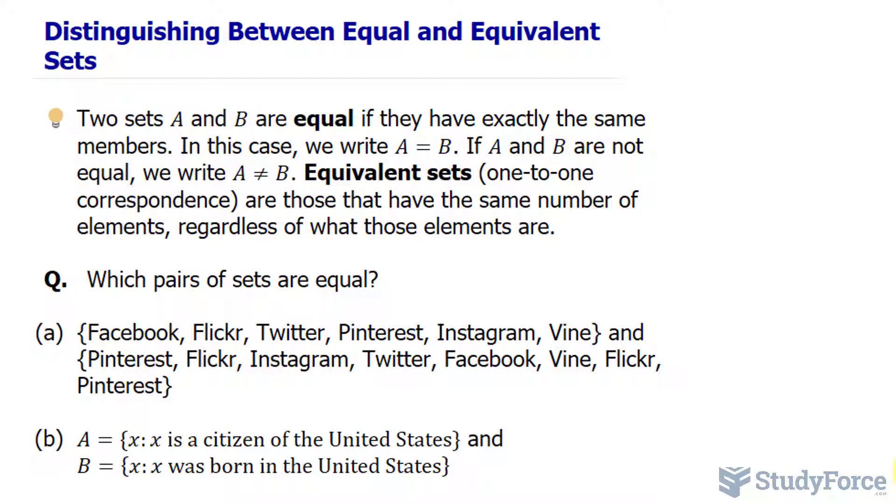Equivalent sets, or one-to-one correspondence, are those that have the same number of elements, regardless of what those elements are. Now, if that's confusing to you, let's go through some problems.